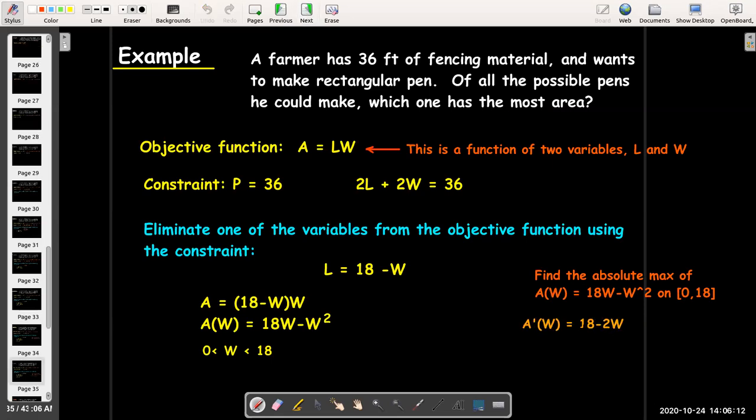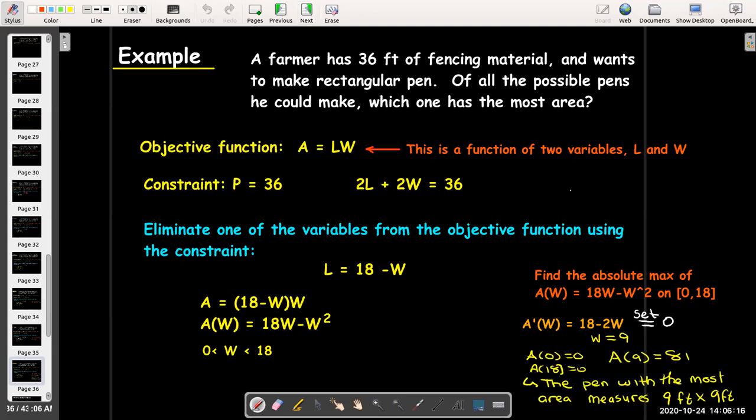We find the critical numbers. So, we go ahead and take the derivative. Set that equal to 0. Solve. I'll get W equals 9. And then I can just check the endpoints.